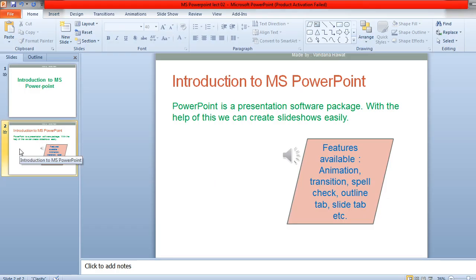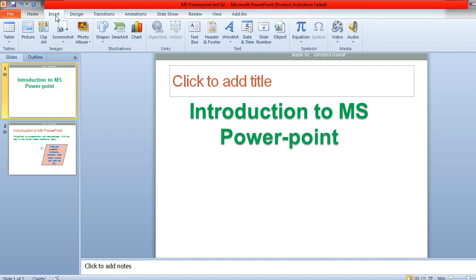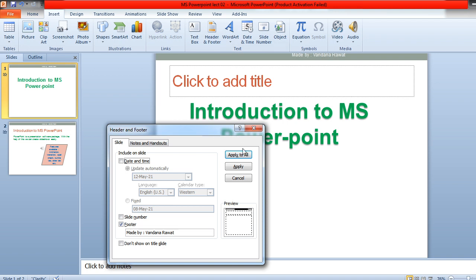The next topic is how to add a header and footer. For example, I have added my name 'Made by Vannaravad'. To add a footer or header, go to the Insert menu, click on Header and Footer, choose date and time if you want it fixed, enter your footer text like 'Made by Vannaravad', and tick the option to include slide numbers. Then click Apply to All.